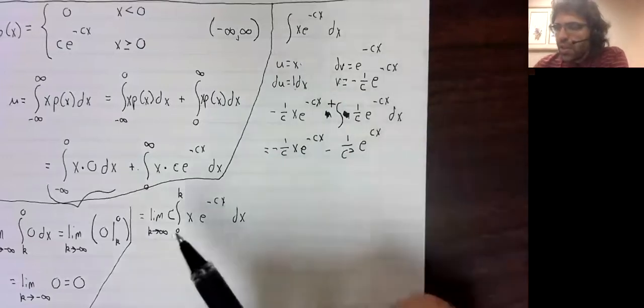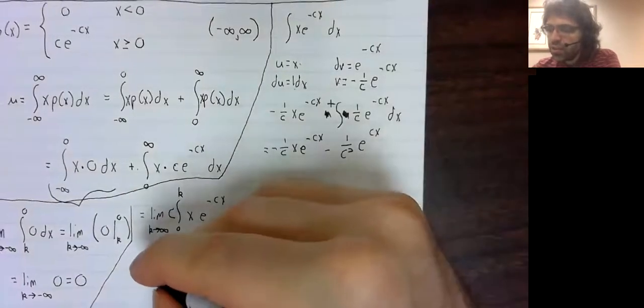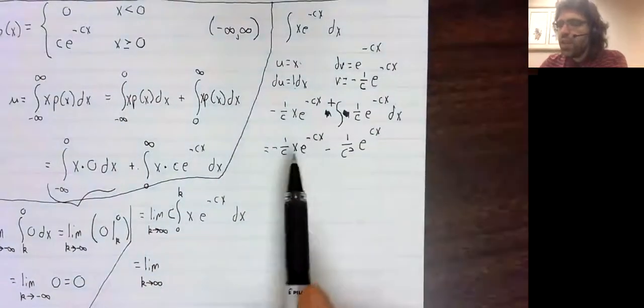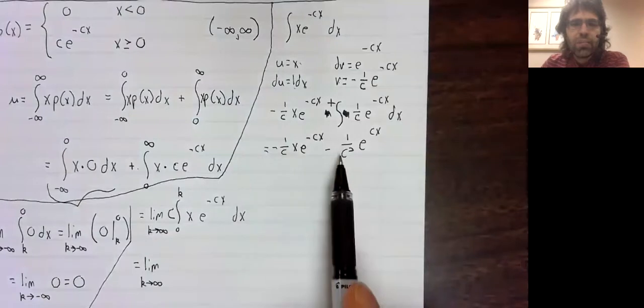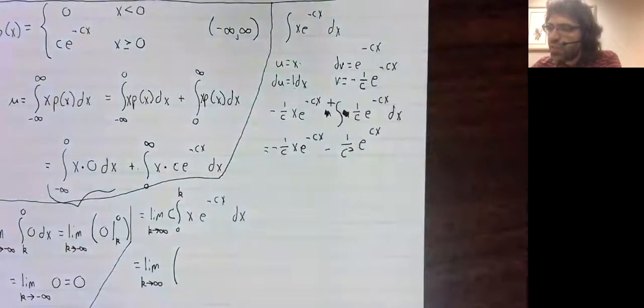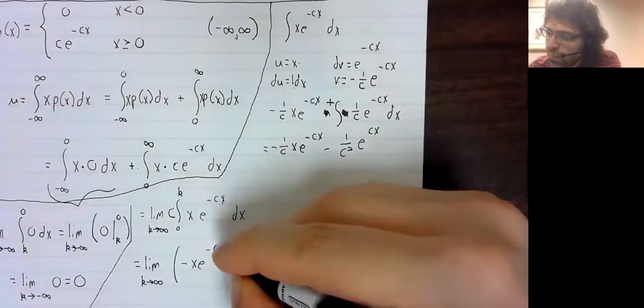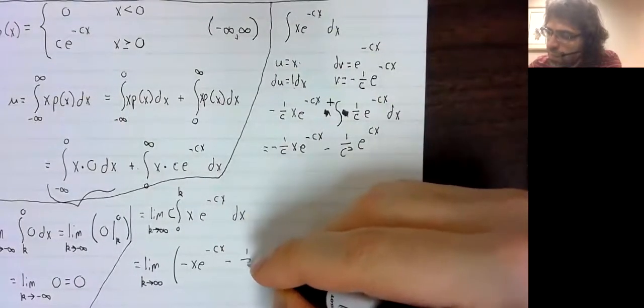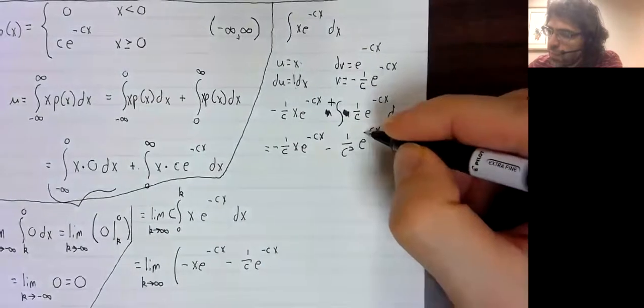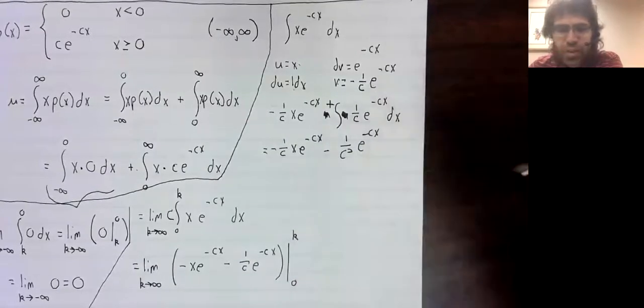And I pulled this c out. So we've got a c in front of this. And that c, of course, will cancel this and partially cancel that. So we've got the limit as k goes to infinity of this evaluated from zero to k.